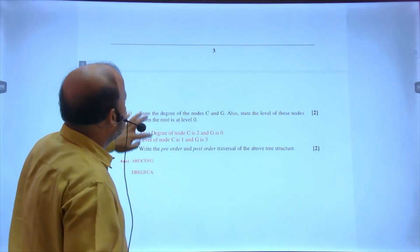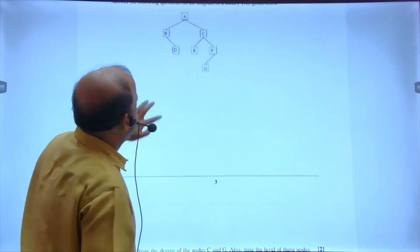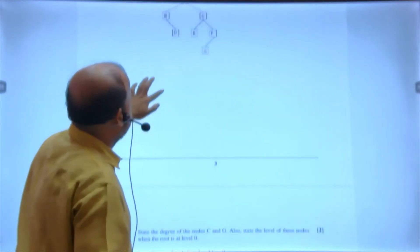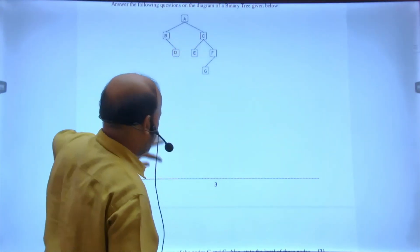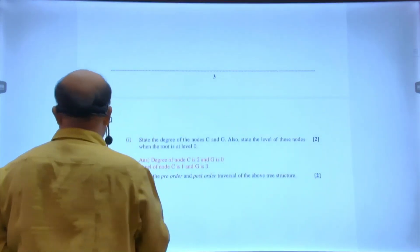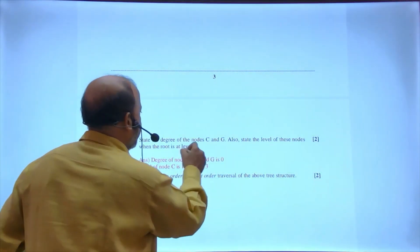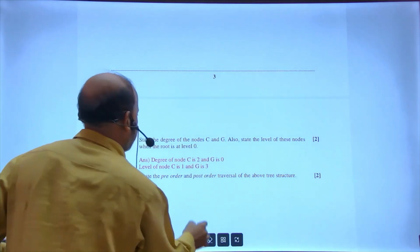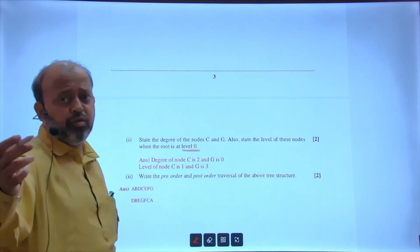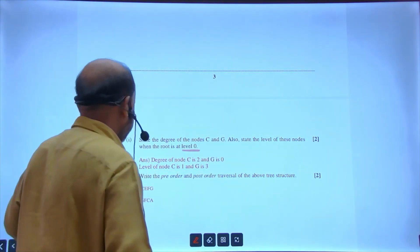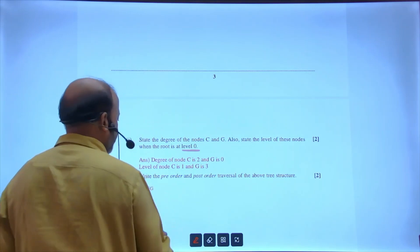Level of node C is one: C is at level 0, 1. And G is three: 0, 1, 2, 3 because it has been told. Level can start from zero or from one. Now in pre-order and post-order I have done beforehand.